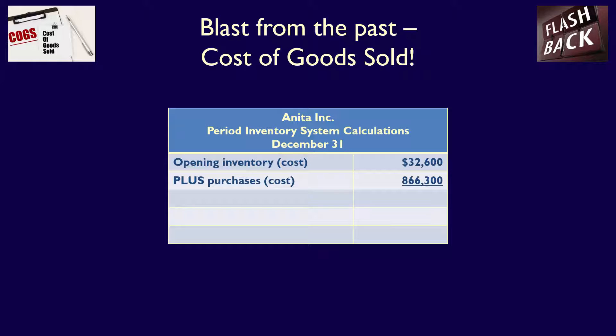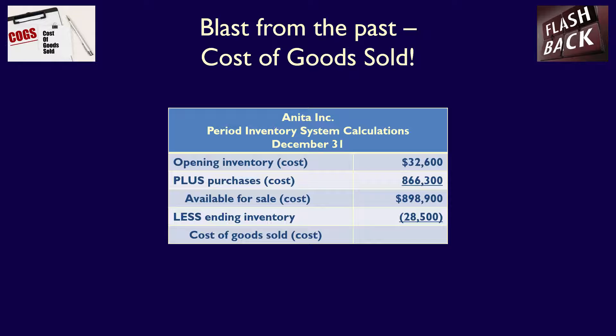During the year, they purchase $866,300 of inventory, again at cost. If we add together the opening inventory and the purchases, we get the inventory available for sale — this is all the inventory that the company has during the period to sell. $32,600 plus $866,300 is equal to $898,900, which is the available for sale inventory. At the end of the year, when we perform an inventory count, we determine that we have $28,500 of inventory still on hand. We assume that any inventory which is not on hand is sold or gone, and therefore part of the expense called cost of goods sold. So $898,900 available for sale minus the ending inventory of $28,500 is equal to a cost of goods sold of $870,400.